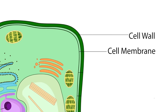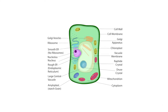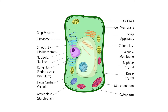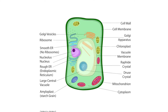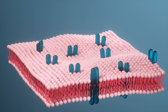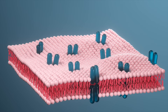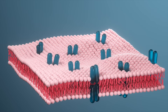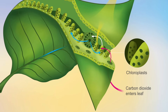Plant cells are unique because they have two additional parts that animal cells don't. They contain another protective barrier called the cell wall. The cell wall surrounds the cell membrane. Both the cell wall and the cell membrane protect and support the cell. The cell wall is made of a strong material that helps the cell keep its shape, and it also filters molecules that pass in and out of the cell.